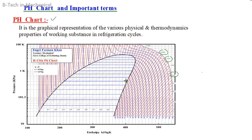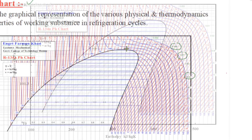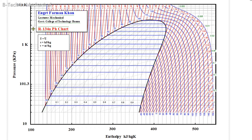So if you can see this chart, different lines are drawn in different directions, and each particular line represents the same property. First of all, we will know the lines and then we will learn the important terms related to the chart. In this figure, we have the PH chart of R-134A with pressure on the y-axis and enthalpy on the x-axis, showing many properties.